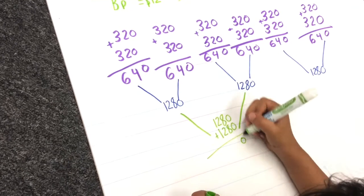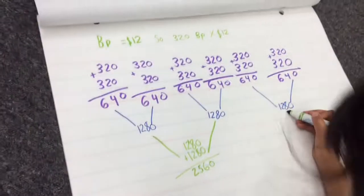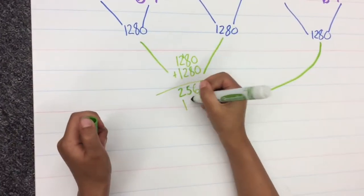The final answer was three thousand eight hundred and forty dollars from selling the big pies.